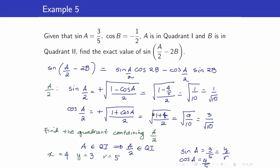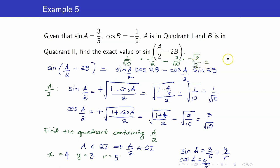Now we are ready to plug in all the values. Sine(a/2) equals 1 over square root of 10, cosine(2b) equals negative 1/2, cosine(a/2) equals 3 over square root of 10, and sine(2b) equals negative square root of 3 over 2. Therefore, sine(a/2 minus 2b) equals negative 1 plus 3 square root of 3, all over 2 square root of 10.